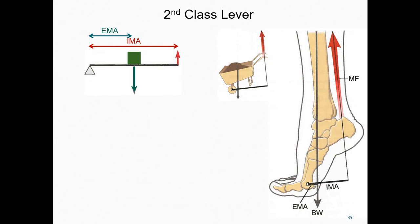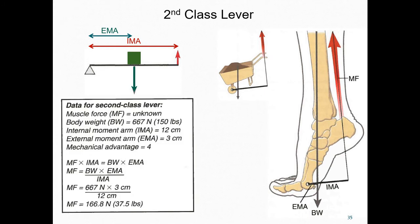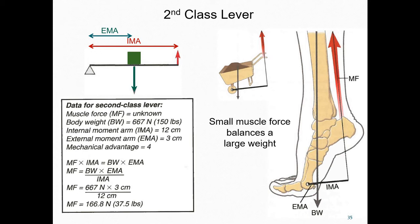Here, the actions of the gastrocnemius, tibialis posterior, and soleus muscles act to raise up the body. The external force is the pull of gravity on the centre of mass of the body. The external force vector falls just behind the axis of rotation located in the first metatarsal head, creating a short external moment arm. The mechanical advantage is calculated to be four. A mechanical advantage greater than one means that a small muscle force can be used to counterbalance a large weight. The pull of gravity on the mass of the body — here 150 pounds — generates a 667 newton external force, and with this mechanical advantage, we can hold up the body using only 167 newtons of muscle force.